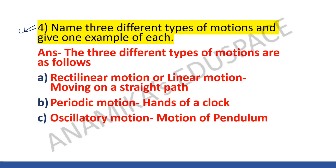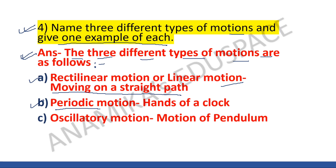Question number four: name three different types of motion and give one example of each. The three different types of motion are as follows. Point A: rectilinear motion or linear motion — example is moving on a straight path. Point B: periodic motion — example is the hands of a clock. Point C: oscillatory motion — example is the motion of a pendulum.